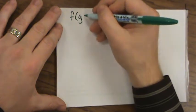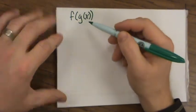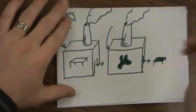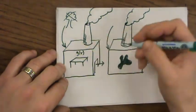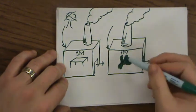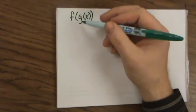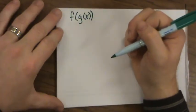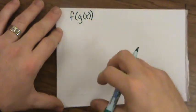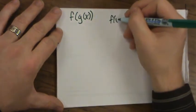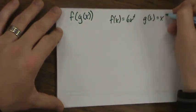Say we want f of g of x. This is like, g of x is like the table factory. Then the green paint factory is like f(x). f(x) is next. Then it does its thing. g(x) does its thing. And then f(x) does its thing. Let's look real quickly at an example, both in numbers and then just in general functions. If f(x) were equal to 6x squared and g(x) were equal to x squared plus 2, let's find out what f of g of 2 is.